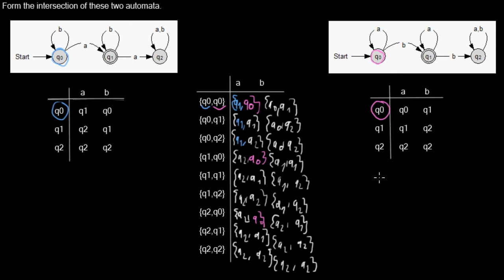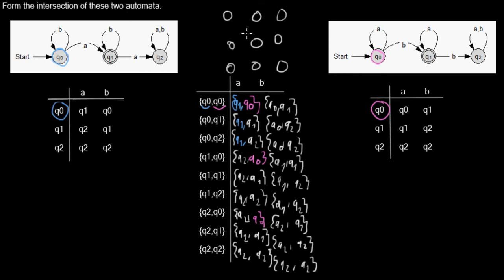Now we have the transition table for our new automaton. I already drew the full automaton in another video, so I'll be quick here since we haven't talked about initial and final states yet. The automaton has nine new states. The initial state in the new automaton is the one that is the initial state in both original automata — Q0 is the initial state in both, so Q0,Q0 is the initial state in the new automaton.